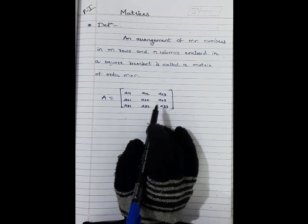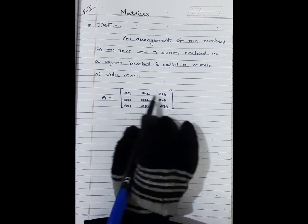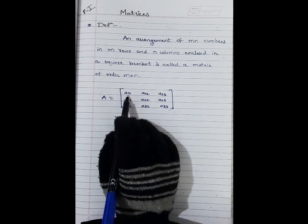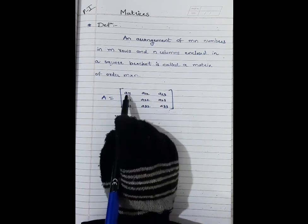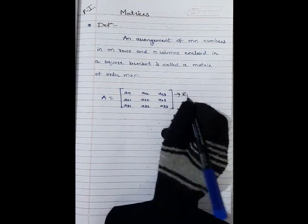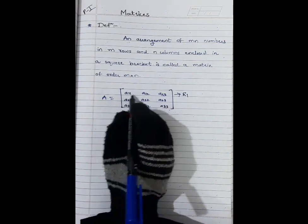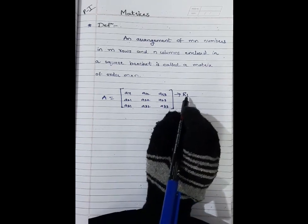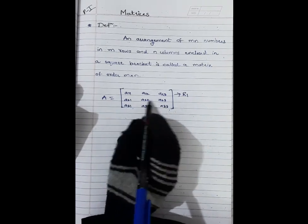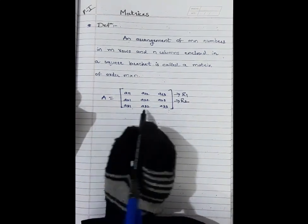In this matrix, we have written general elements. Let's see how many rows there are. Elements a₁₁, a₁₂, a₁₃ are called elements of the first row, R1. Similarly, a₂₁, a₂₂, a₂₃ are called elements of the second row.